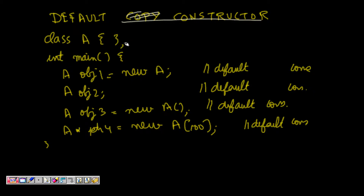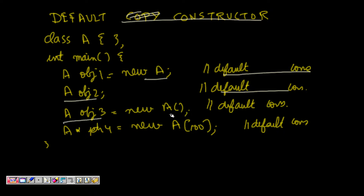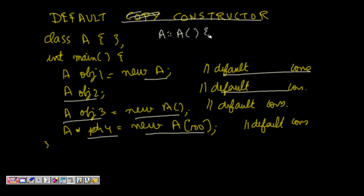For example, in 'class A' with no constructor defined, writing 'A object1 = new A' calls the default constructor, 'A object2' also calls the default constructor, 'A object3' calls the default constructor, and 'A* ptr4 = new A[100]' creates 100 objects all calling the default constructor. This all works fine because the default constructor is auto-generated when we haven't defined any constructor.